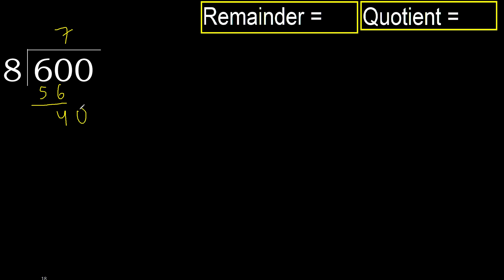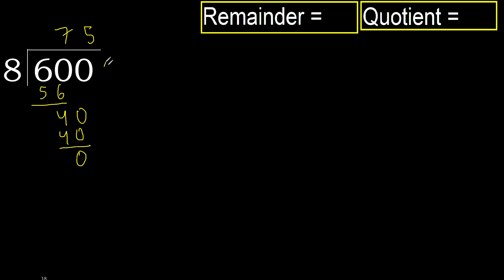Next, bring down to get 40. 8 multiplied by 5 is 40, which is not greater. Subtract: 40 minus 40 is 0. Next digit — there is no more number, therefore we finish.